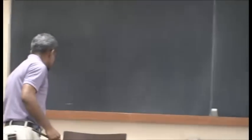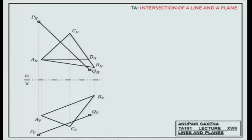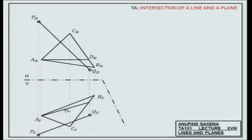Step one: to look at the edge view of the plane. Draw a horizontal that would be parallel to the horizontal hinged line. Mark d_H on d_H c_H, take its projection down, mark d_V — so a_V d_V will be in true length. Make a hinged line perpendicular to a_V d_V, shoot the projections out, and measure the distances. Those distances get transferred over and this is how you get the edge view of a plane.